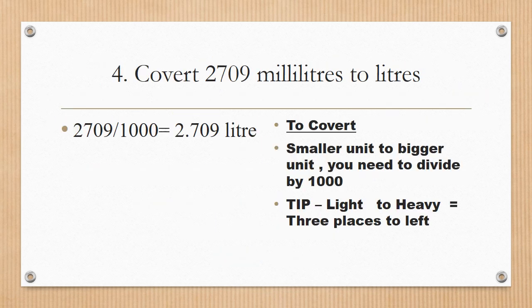Next question: convert 2709 milliliters to liters. Converting from a smaller unit to a bigger unit, you divide by 1000, which means moving the decimal point three places to the left. So 2709 divided by 1000 equals 2.709 liters. Always write the unit.